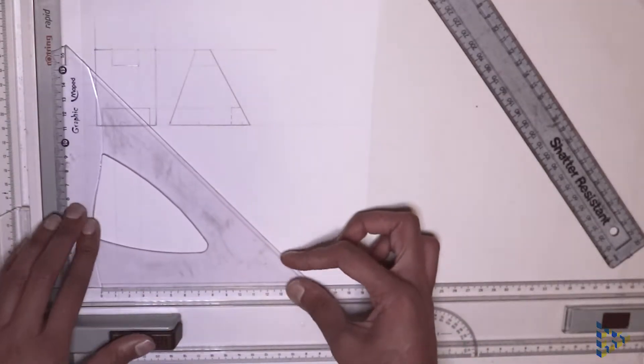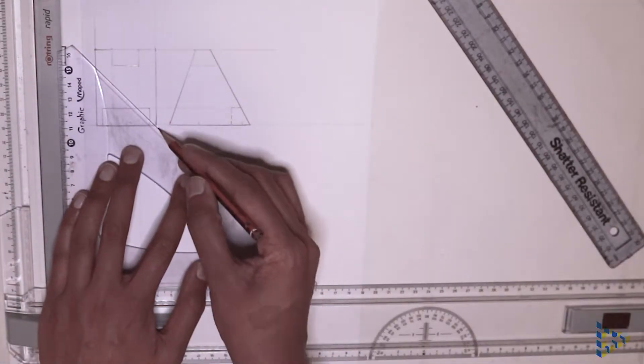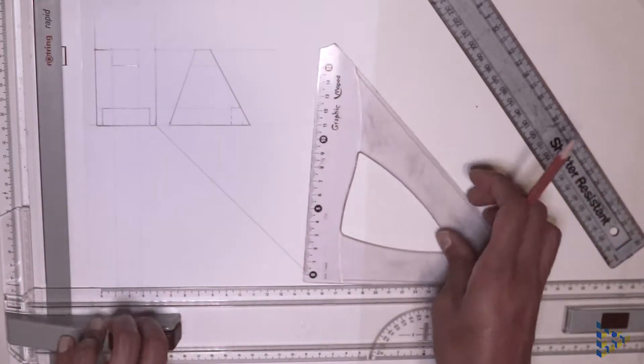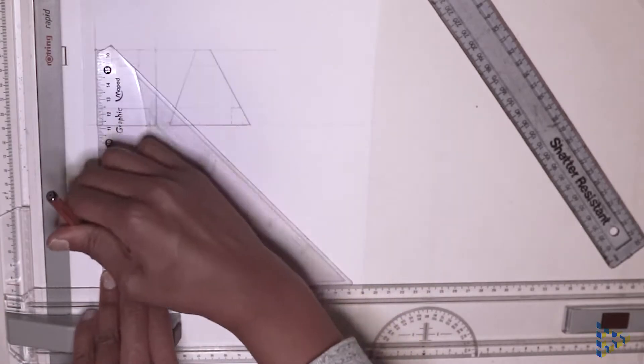Draw a 45 degree line to the front view. Let's first determine the length of our plan view. Project lines vertically from our front view and down from our left side view.